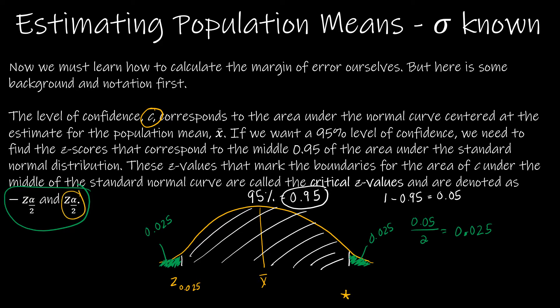Now while it's still denoted z alpha over 2, really what I'm going to be looking at is if this area to the right is 0.025, what's the area to the left? Well, the area to the left of this is 95% plus 2.5%. So this guy is actually 0.975.